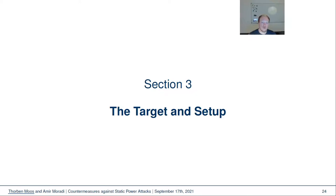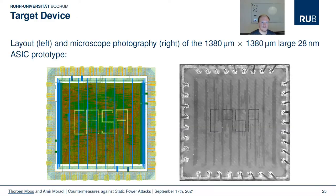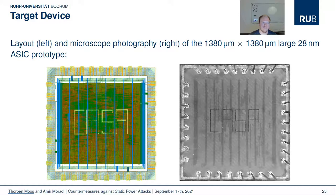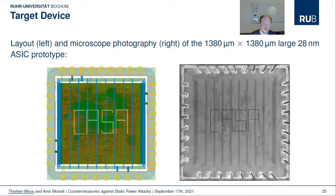We now quickly present the target device and measurement setup for the practical experiments. Here you can see the 28nm CMOS chip developed for this investigation. On the left the layout is presented, and on the right a microscope photograph of the manufactured and bonded die of the ASIC is shown. Each side of the chip is only 1.3 mm long. CASA is the name of the excellence cluster at the Ruhr University Bochum through which this research project was funded.